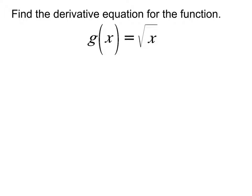Now let's do something more interesting. Please find the derivative equation of g(x). When we plug in, we end up with an expression that at first doesn't look very encouraging — there's no obvious way to simplify it as it is. But remember when we learned different ways to find limits algebraically, one method is specifically for this type of function: when we have square roots, we multiply by the conjugate. So multiply the top and bottom of the fraction by the conjugate.